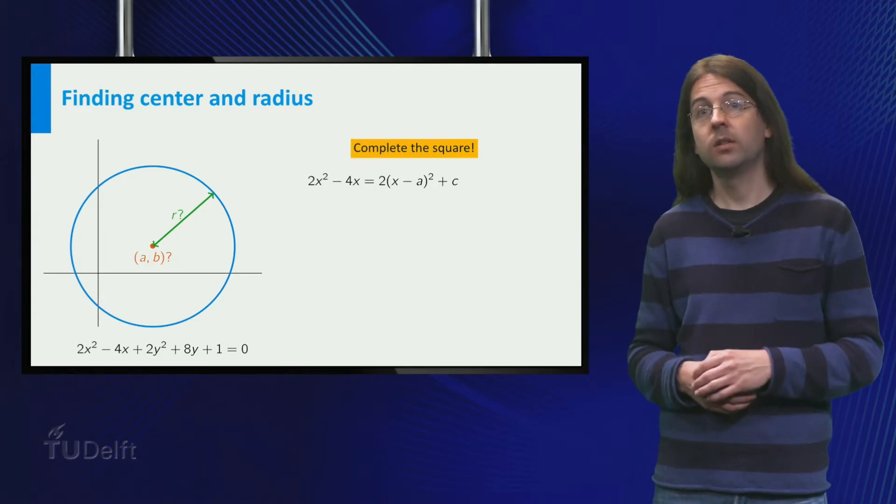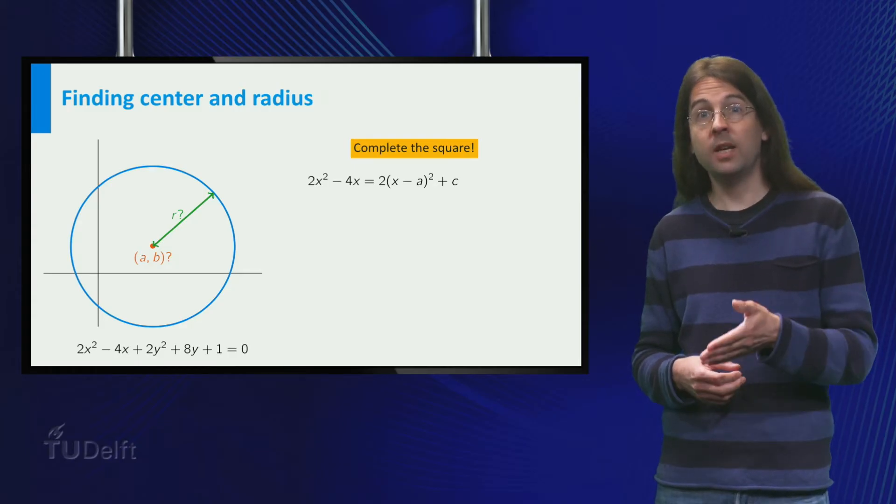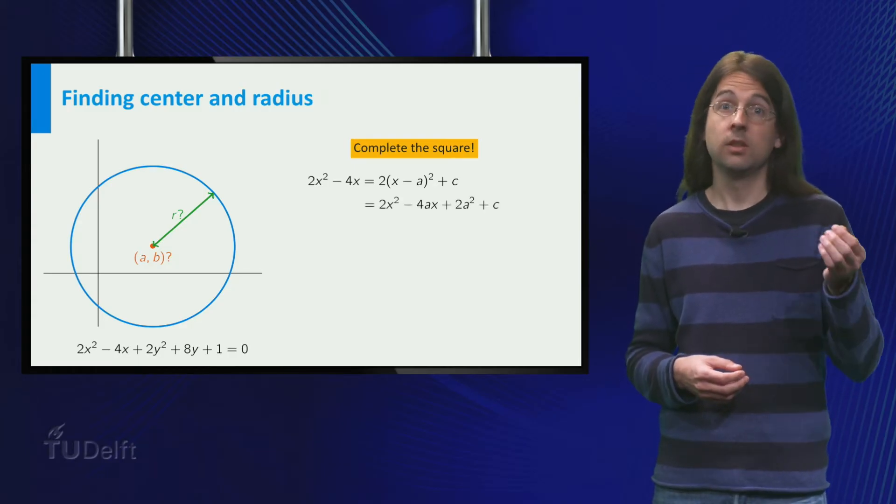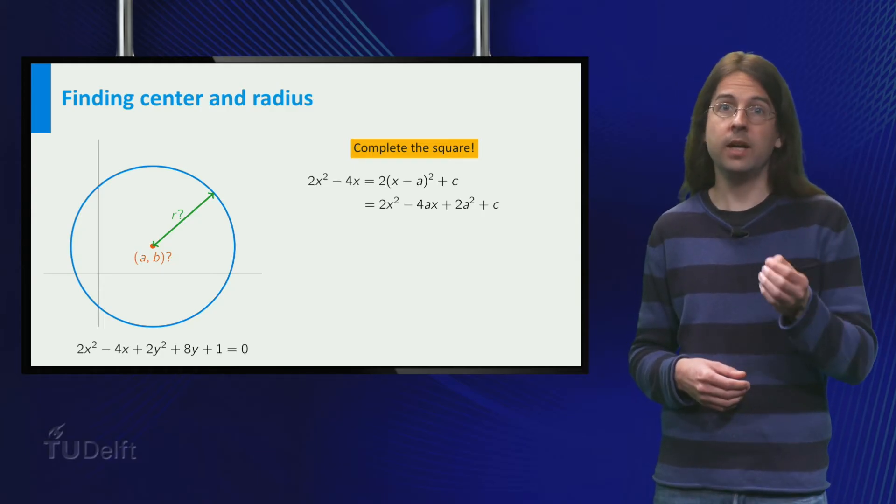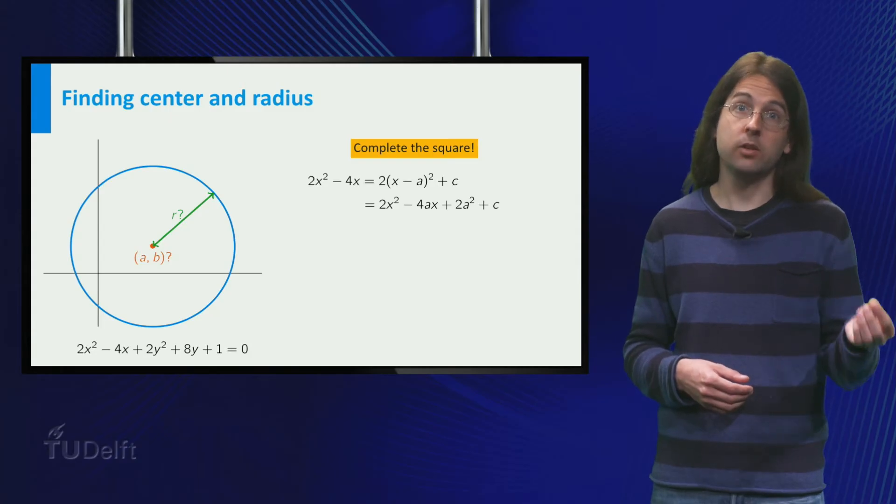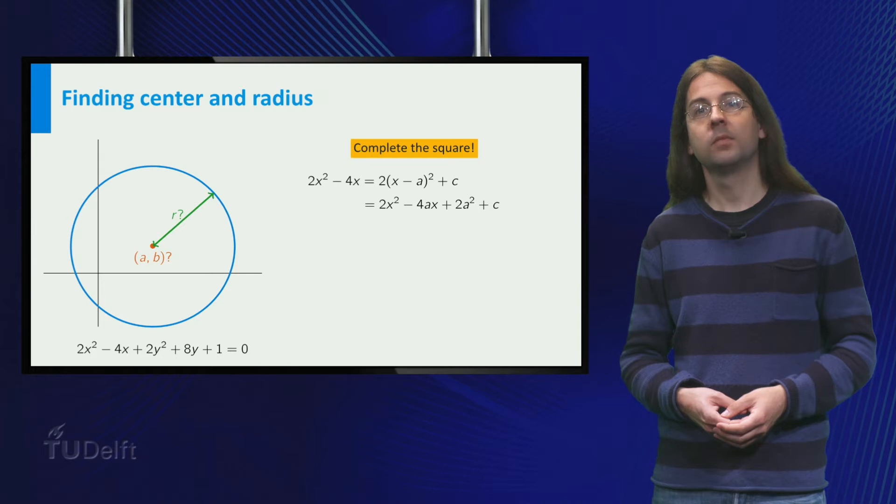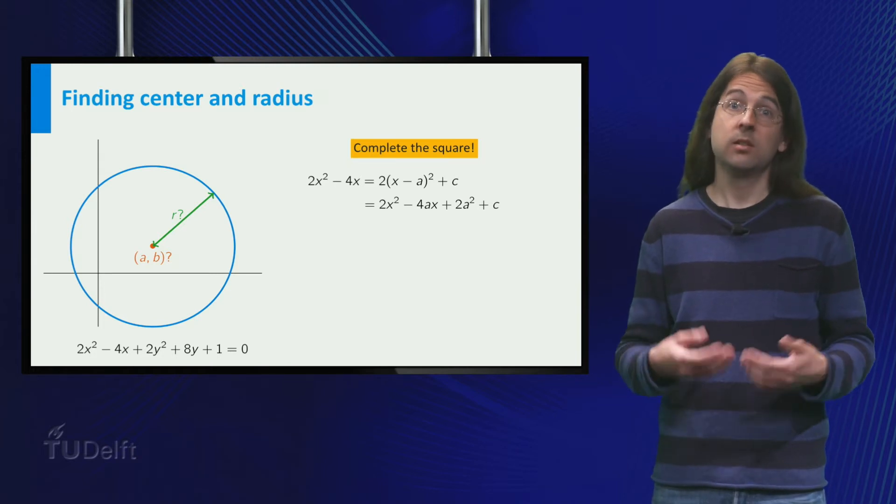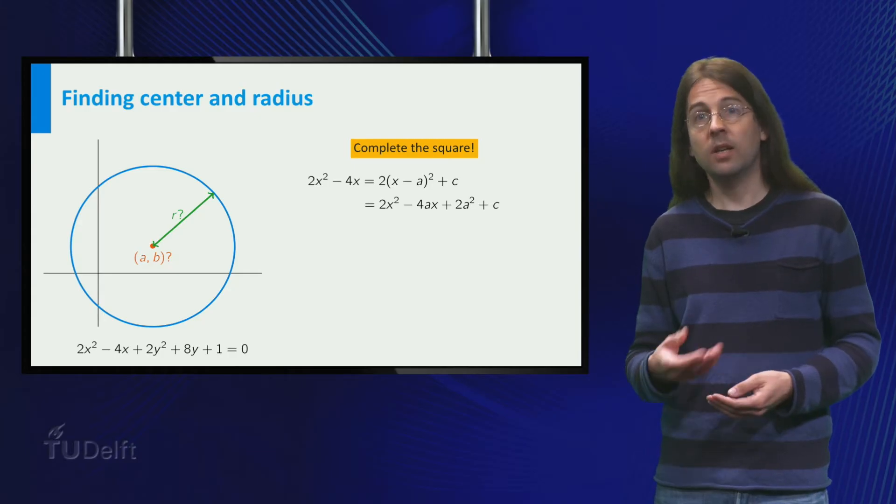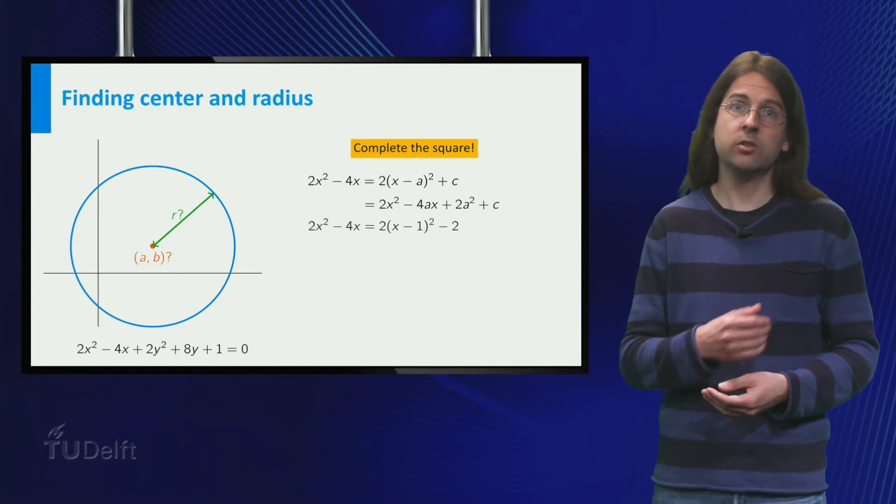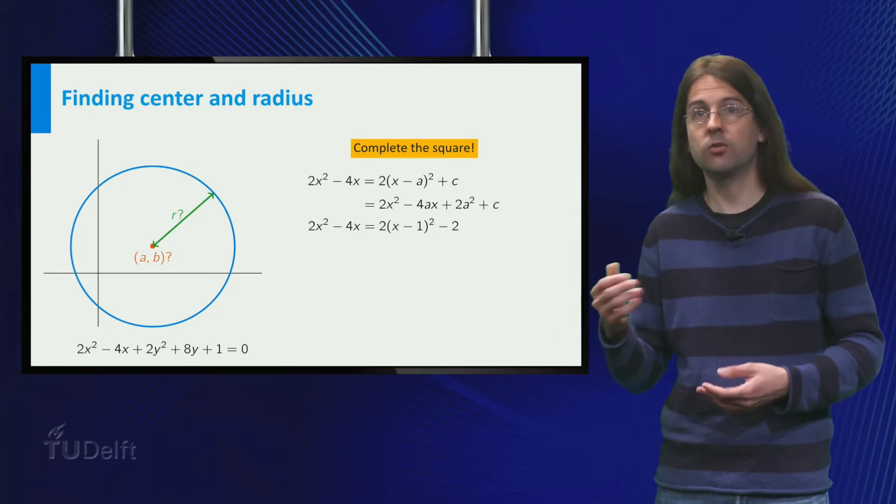Indeed, if we expand 2 times x minus a squared plus c, we obtain 2x squared minus 4ax plus 2a squared plus c. So minus 4x must be equal to minus 4ax, and a equals 1. But then c must be minus 2a squared, which is minus 2. Thus we can replace 2x squared minus 4x by 2 times x minus 1 squared minus 2.